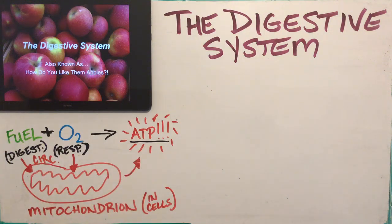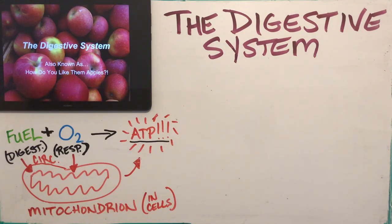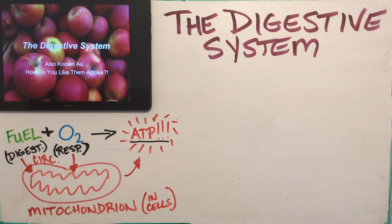Fuels enter our cells along with oxygen, and the mitochondria turns the fuel and oxygen into ATP. How those fuels get from our intestines and the oxygen gets from our lungs to all of our cells is the job of the circulatory system. Digestion puts the fuel in the blood, the respiratory system puts oxygen into the blood, and then the circulatory system distributes that blood throughout the body so cells can make ATP.